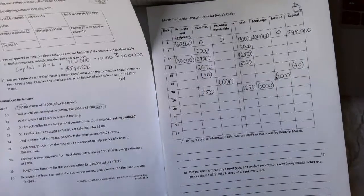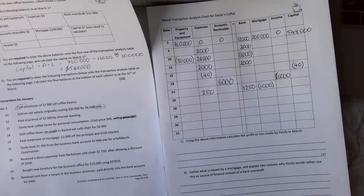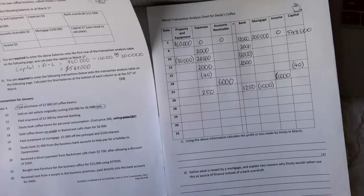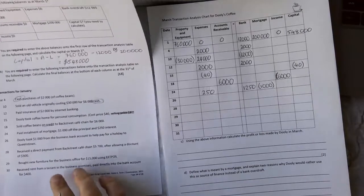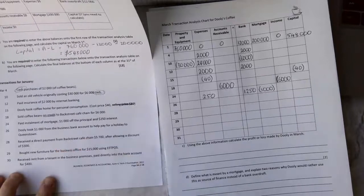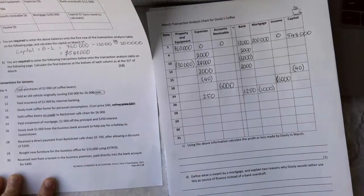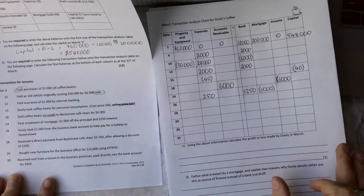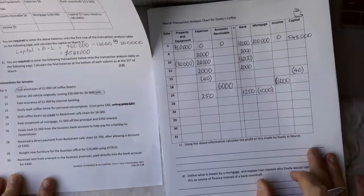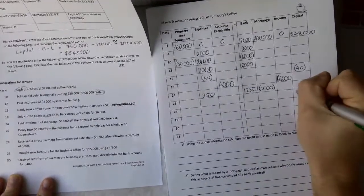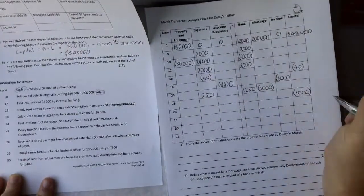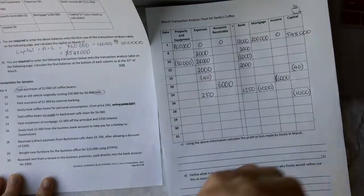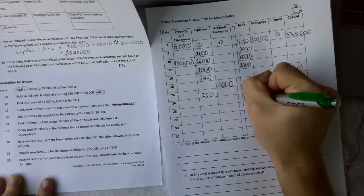Number 26, Dooley took $1,000 from business bank account to help him pay for a holiday to Queenstown. And so that is number 26 that we are doing now. So Dooley took $1,000 from the business. We know straight away as we say took, it must come out of capital. And in this case, he's taking it out of the bank account. So we're going to owe the bank more money.